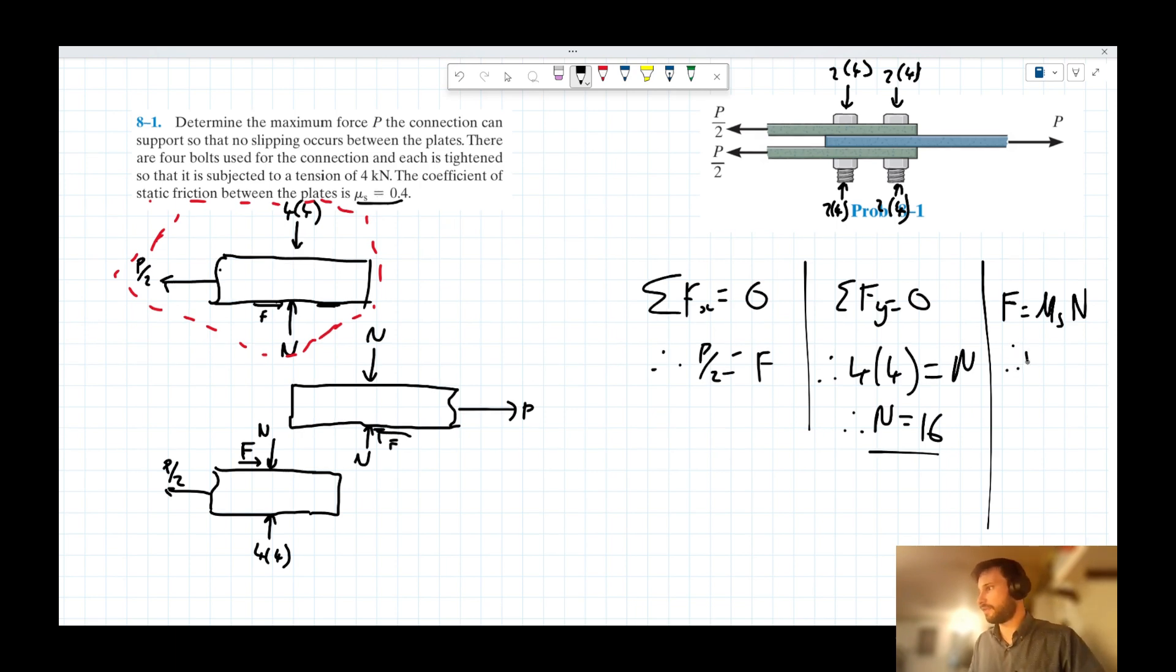So we can say, therefore, F is equal to 0.4 times 16, 6.4 kilonewtons. So we can take this idea here that F is equal to 6.4, substitute it in here. So we can say, 6.4 is equal to P over 2. Therefore, P is equal to 6.4 times 2, 12.8 kilonewtons. And there we have it.